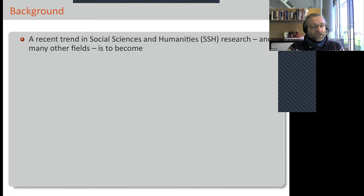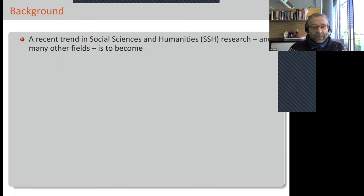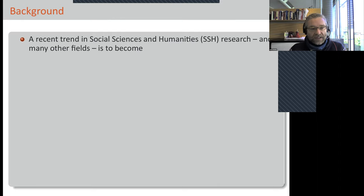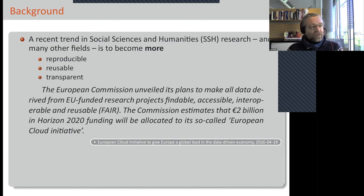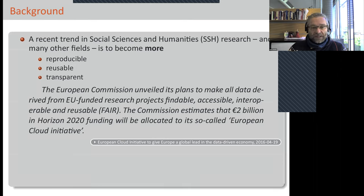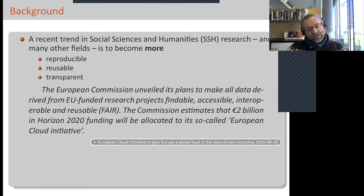Fast forwarding to more recently — over the last ten years at least — there is a trend in social sciences and humanities, and in many other fields as well, where they try to become more reproducible. I want to stress the 'more': it's not that this has never been an issue, but it has certainly been stressed more over the last decade. Things should be more reproducible and data should be more reusable.